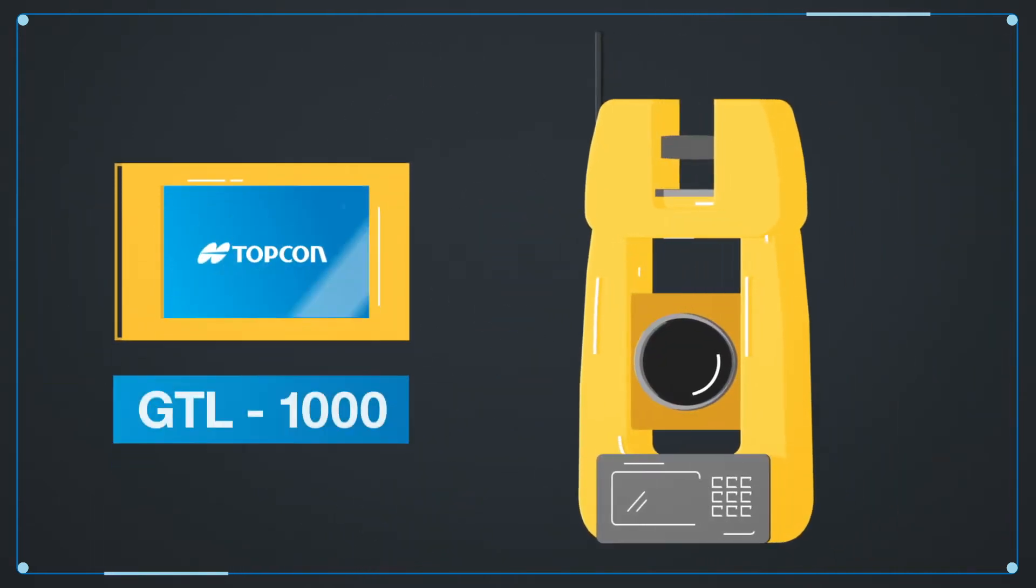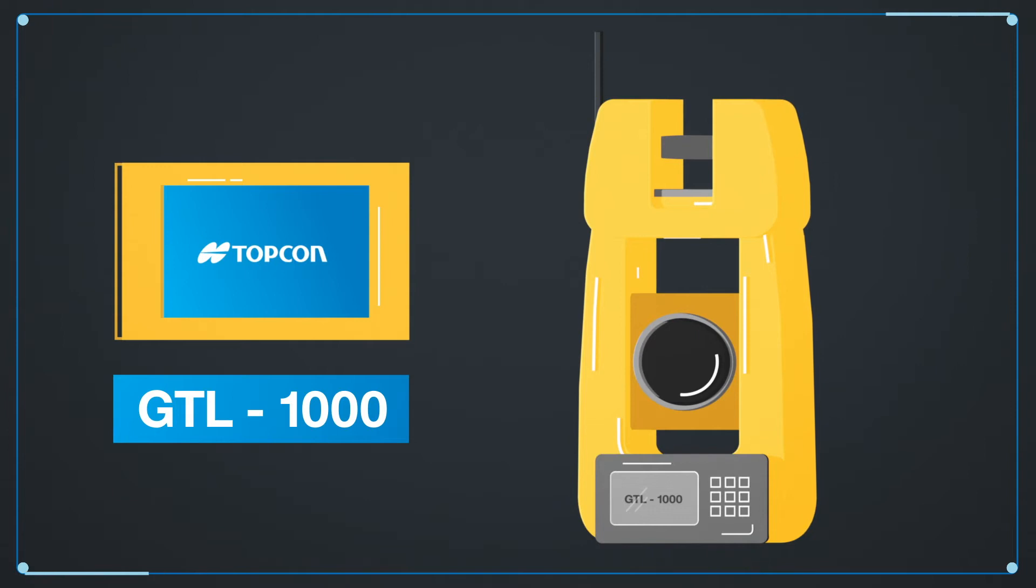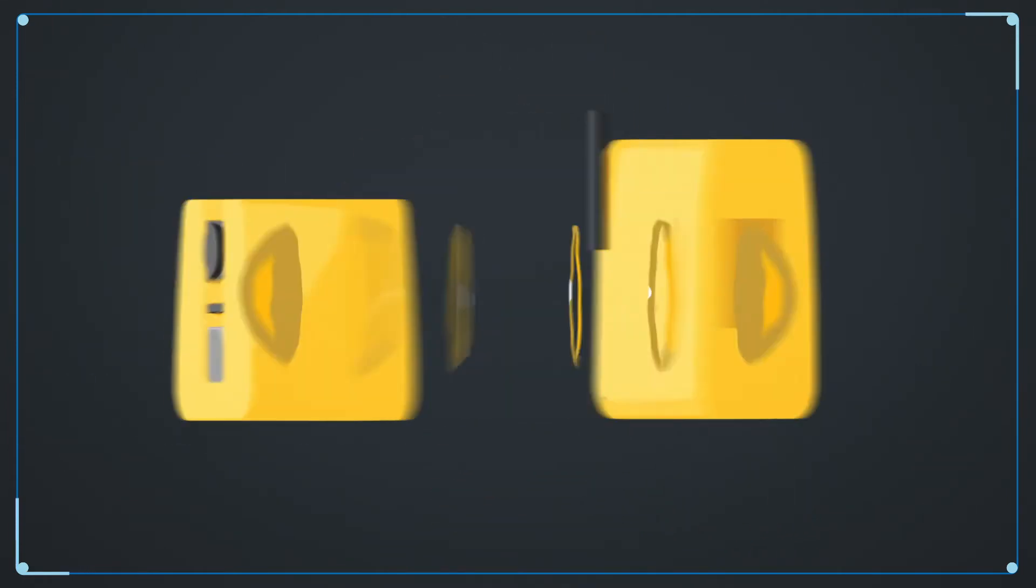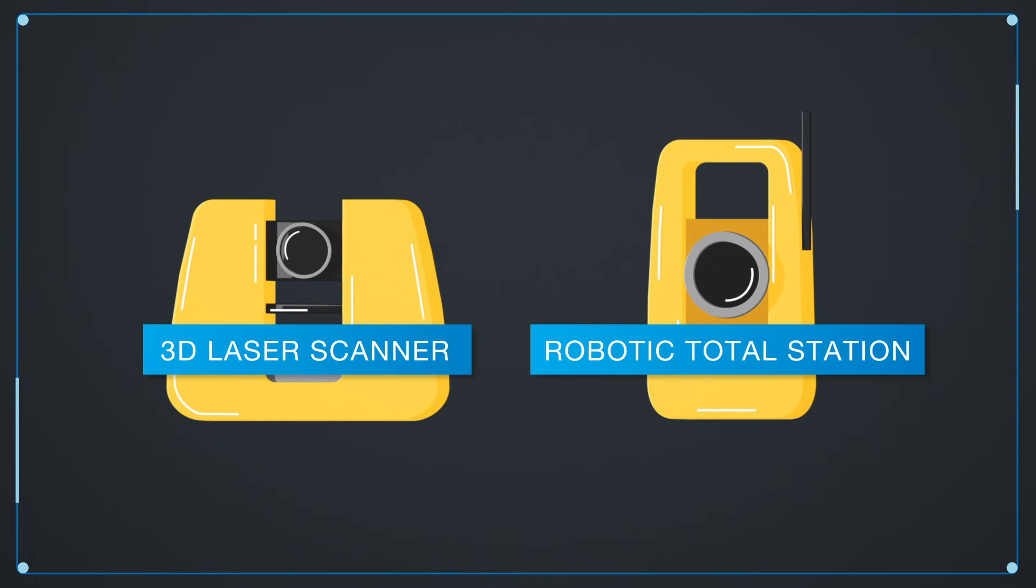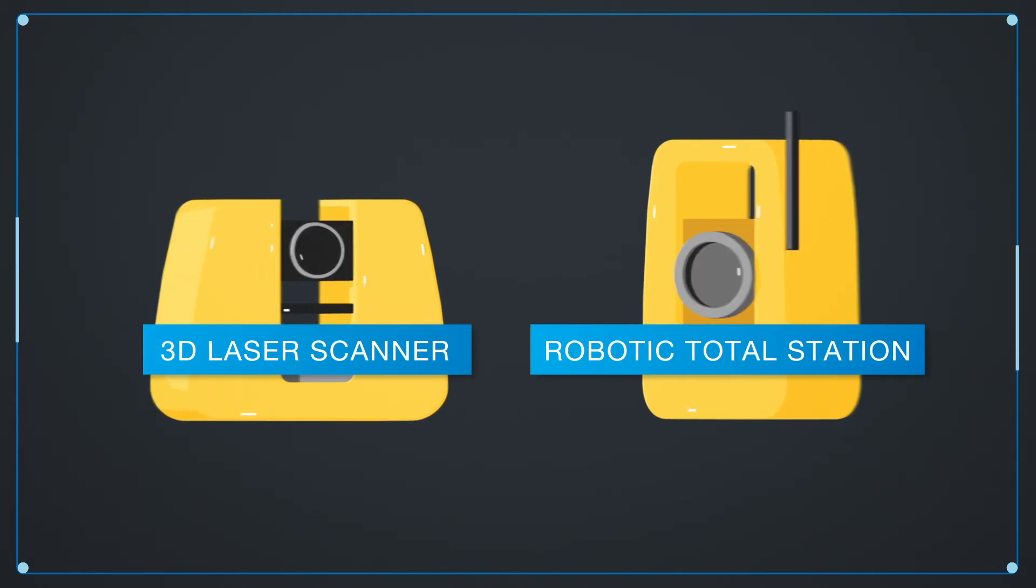Topcon recognized this problem and responded with the GTL instrument. The GTL instrument uses the digital layout capabilities of a one-man robotic total station with the power of a 3D laser scanner.